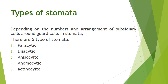Stomata is made up of three units: stoma, guard cells, and subsidiary cells. Now let us look at the types of stomata. How plants contain different types of stomata totally depends on the number and arrangement of subsidiary cells around guard cells. Depending on this arrangement and number, there are five types of stomata: paracytic, diacytic, anisocytic, anomocytic, and actinocytic.